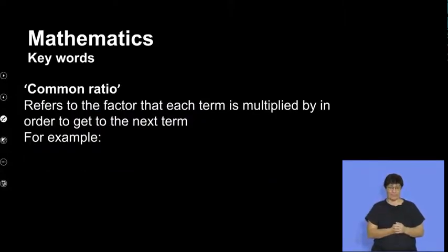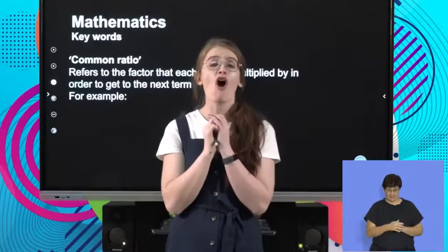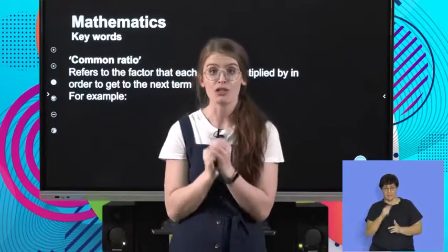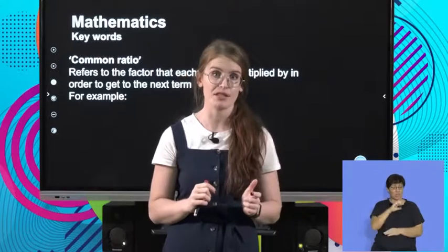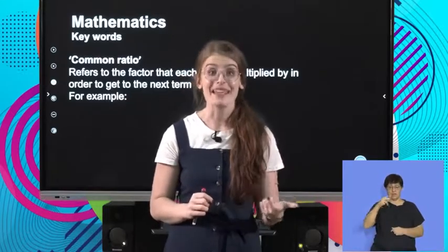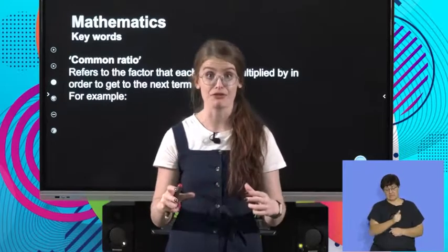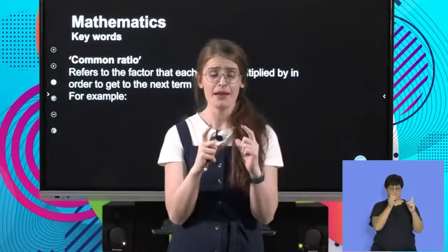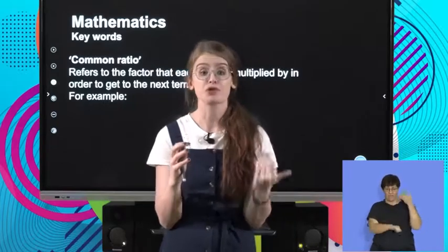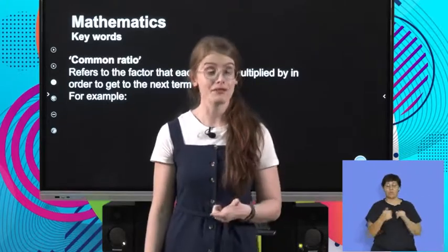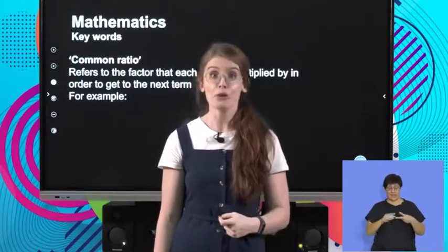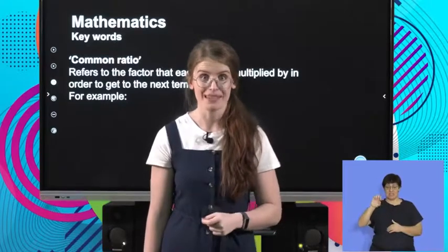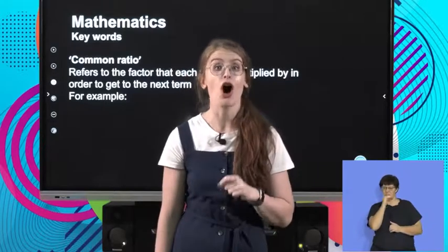We are now getting into the main principle, the main definition, the most important thing of a geometric pattern. And that is a common ratio. Before I talk about the common ratio, I just want to remind you that before geometric sequences, we do arithmetic sequences. And arithmetic sequences have a common difference. And that is when there is a specific number that is constantly added or subtracted between successive terms. And a common difference is the main characteristic of an arithmetic sequence. A geometric sequence has a common ratio. Let's look at the board to see the definition of a common ratio.